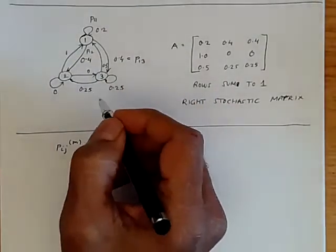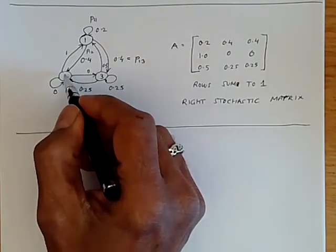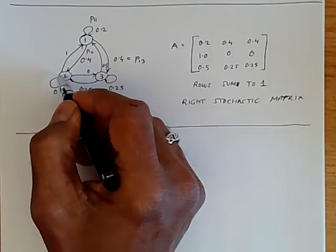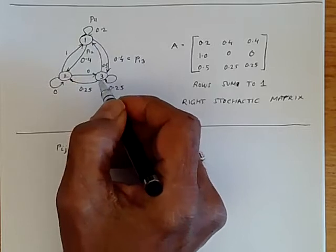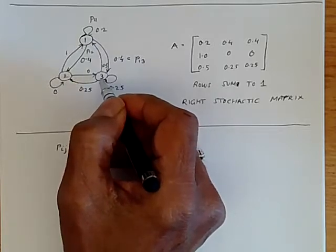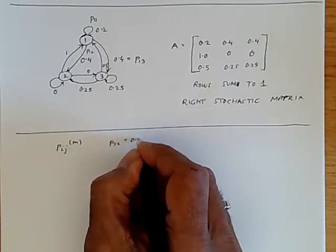To give a simple example, let's look at state three, which with probability 0.25 is going to go to state two. But then from state two at probability one, it's going to go to state one. So that means that the one-step probability P32 is 0.25.